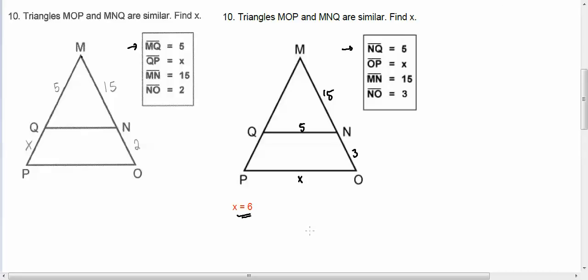But the hard part is the student didn't get those same numbers, and they will never get the same answer because they were given different parts. MQ in this problem is 5, which they accurately labeled. QP is X, and MN is 15, and NO is 2.